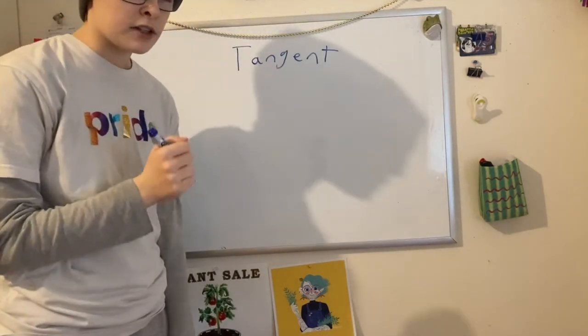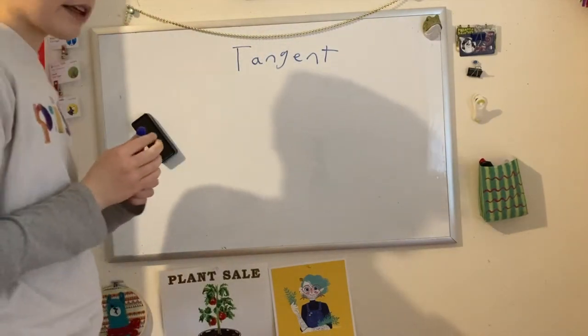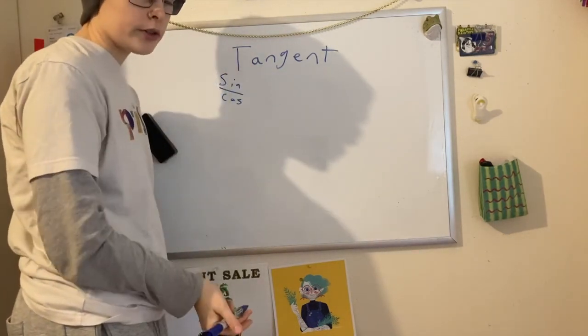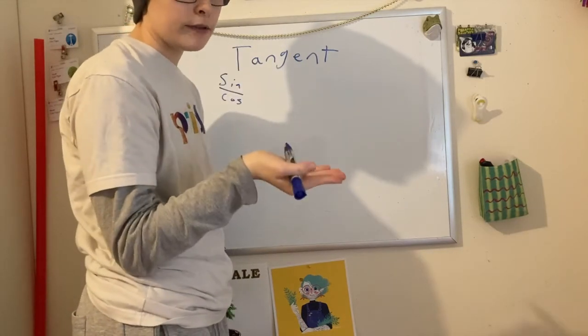Finally, we should memorize the tangent. If you've memorized sine and cosine, you can probably figure it out, but I think that takes too long. Tangent is equal to sine over cosine. We're just going to find the tangent of those three points in the first quadrant, and then we're going to apply the negativity and positivity rules.